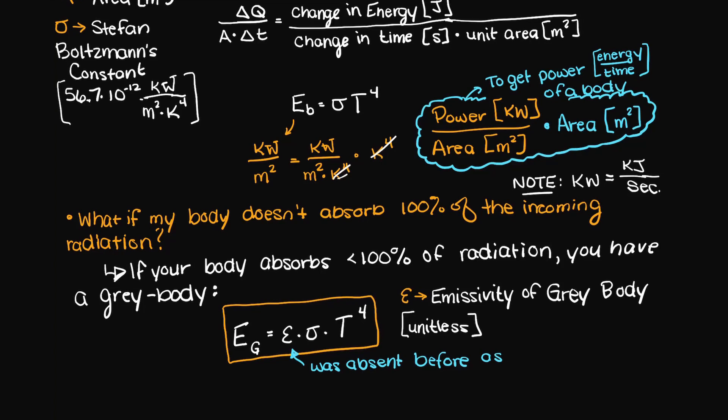These bodies are called grey bodies, so every real body is a grey body, however some real bodies can be approximated as black bodies like black paint.